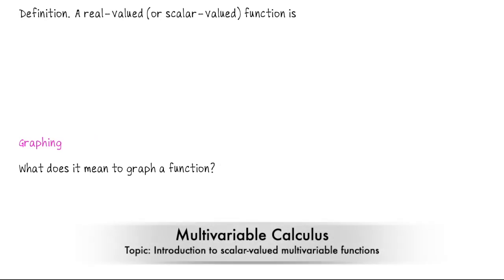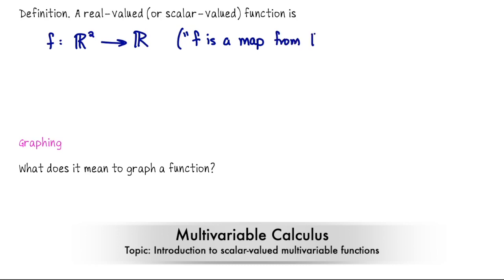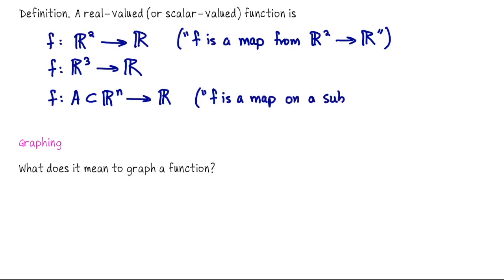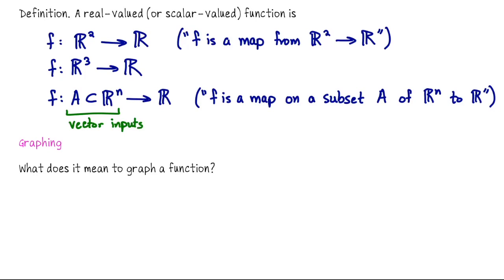In this unit we're going to talk about real-valued functions. These are functions of the form f mapping from R² to R, or f mapping from R³ to R, or perhaps f mapping from a subset A of Rⁿ — meaning R², R³, or whatever space you'd like — to R. The key distinction is that the function takes in vectors and returns scalars.